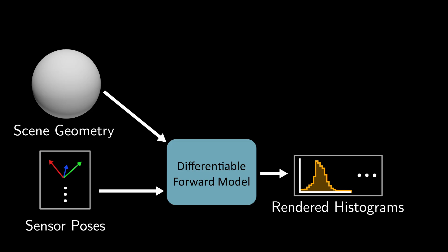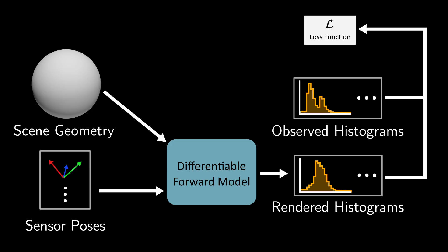To recover the geometry of the scene, we initialize the neural SDF network to a sphere. We render histogram measurements of the scene and compare them to the observed histograms via a loss function. Because the entire rendering process is differentiable, we can take the derivative of this loss function with respect to the scene geometry.